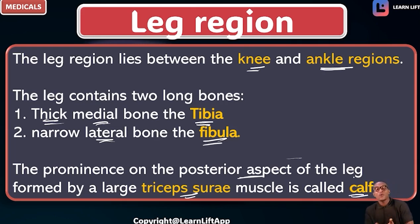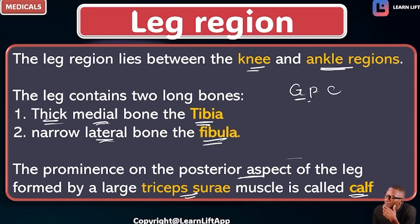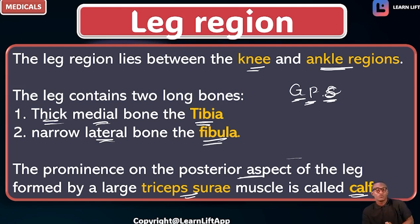What are the calf muscles? I call them the GPS. We have the gastrocnemius muscle, the plantaris muscle, and the soleus muscle — GPS. The prominence at the posterior aspect of the leg is formed by the triceps surae, a group of three muscles called the calf muscles.